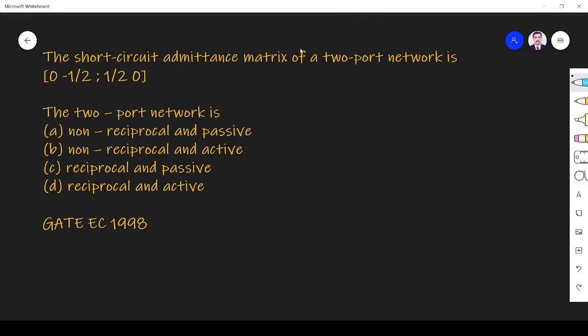Hi friends, in this video let us solve a two-port network parameter related question asked in GATE EC 2003 paper. The question is: the short-circuit admittance matrix of a two-port network is, they are given the short-circuit admittance matrix, that is the Y parameter.